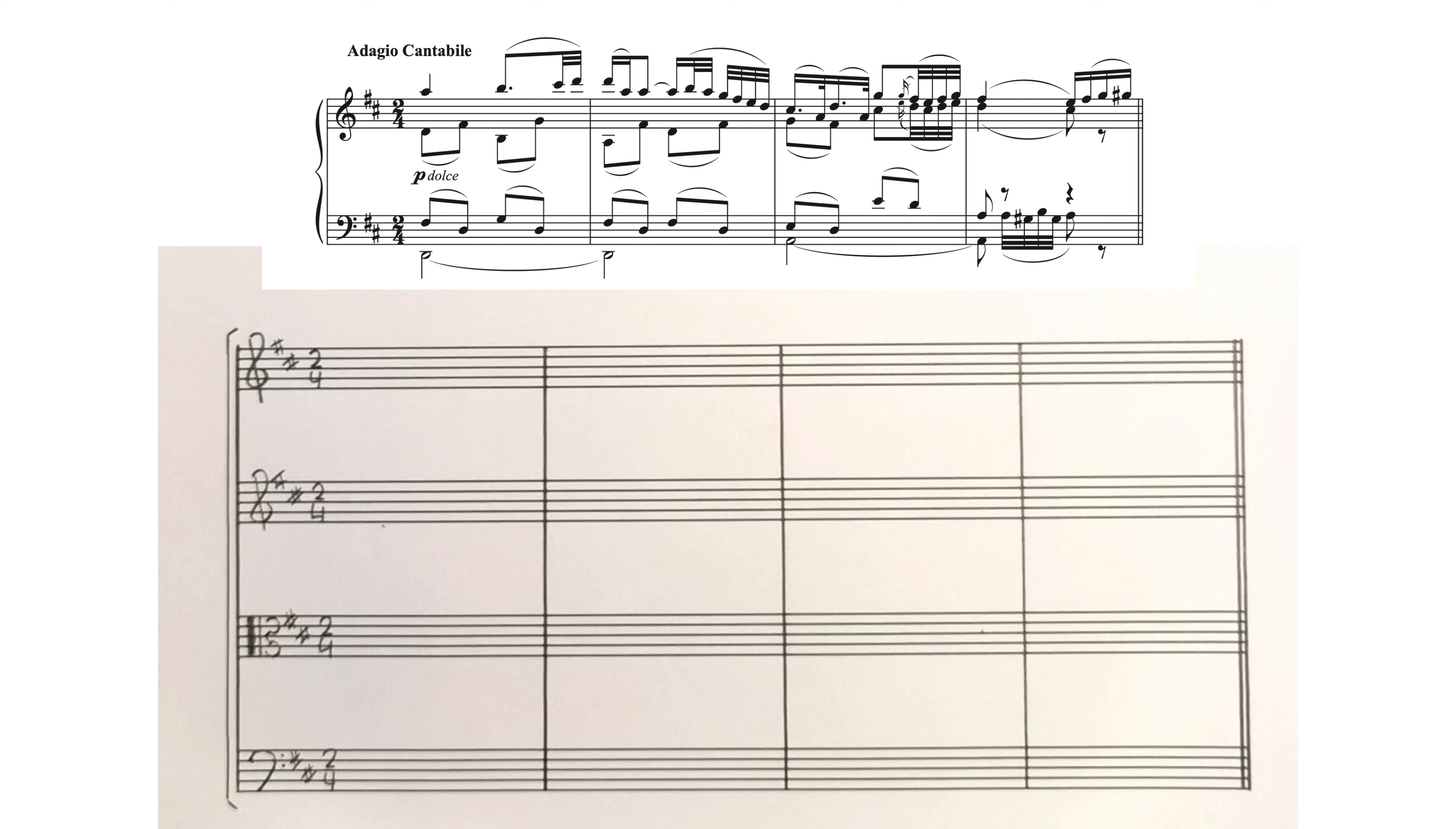Now after that I'm going to write the clefs, the time signature, the key signature, and a sectional bracket. So remember the first violin and the second violin are both written in treble clef, the cello is written in bass clef, and of course the viola is written in alto clef, one of the new C clefs we learned in the scales unit.